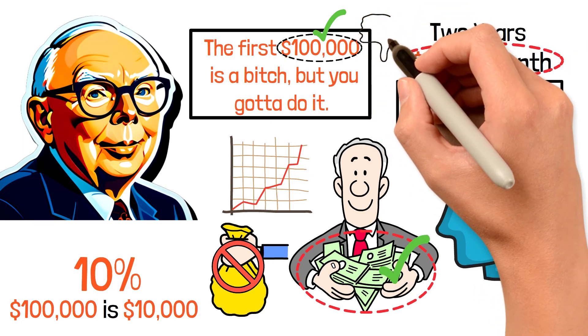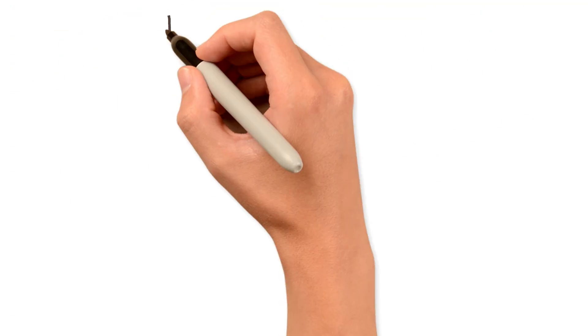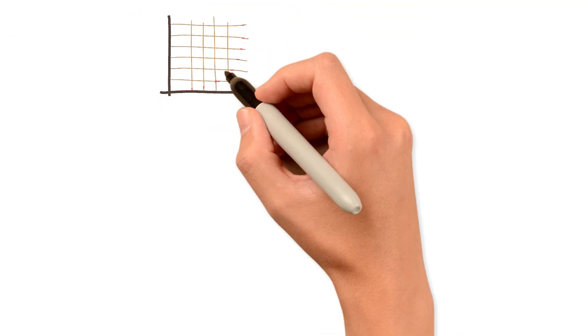This is why so many people give up before reaching that first $100,000. They don't realize they're quitting right before the exponential curve kicks in.